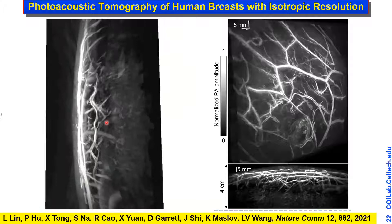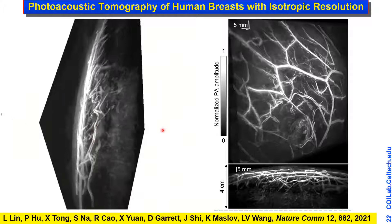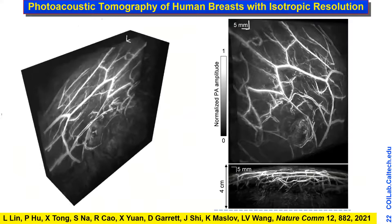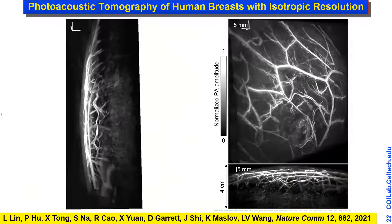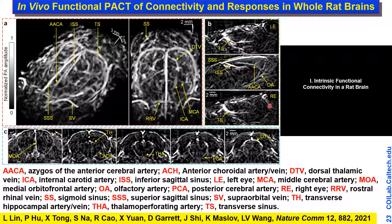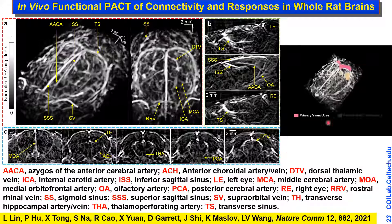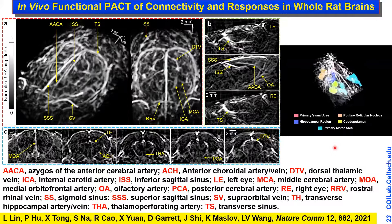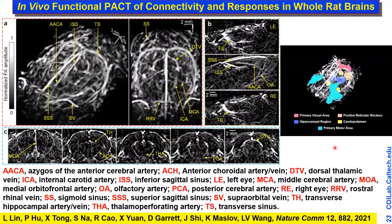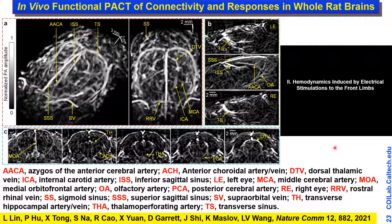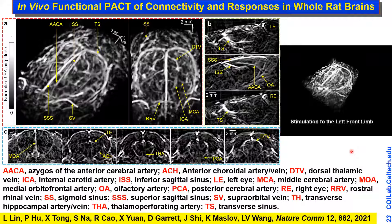A 3D breast image acquired within 10 seconds shows quite detailed blood vessel structures in projection images from different views. Using the same system for brain imaging, we can image the entire rat brain and quantify functional information across different brain areas. Electrical stimulation of the left forelimb activates the contralateral side of the brain, and comparing on and off states shows the brain activation indicated by color.